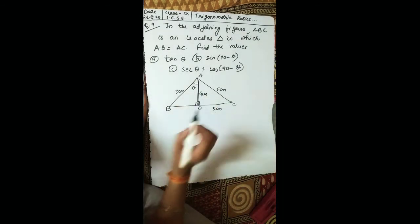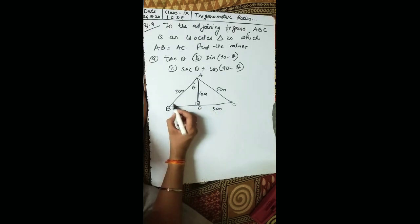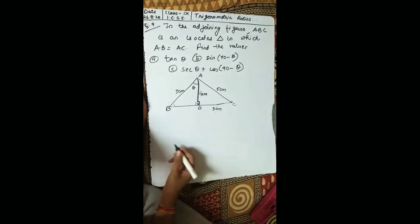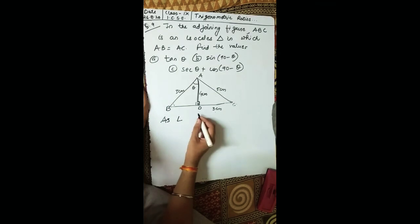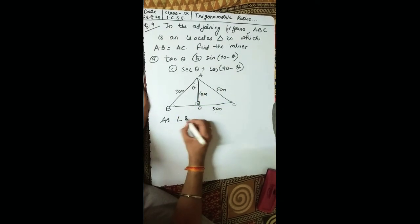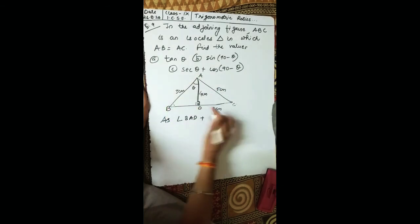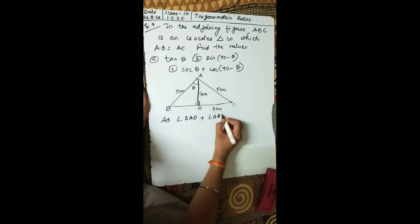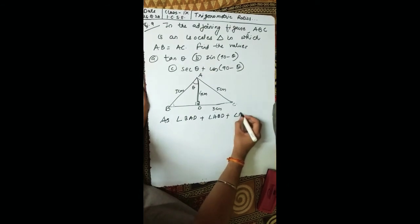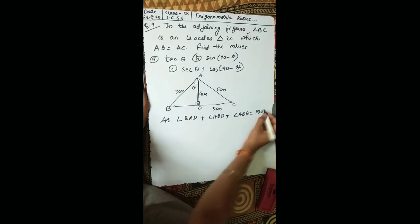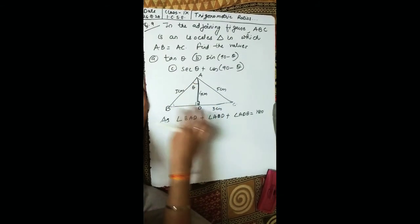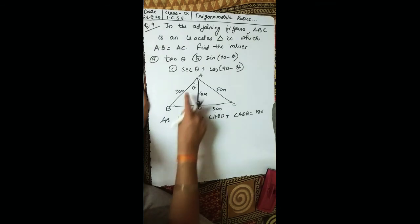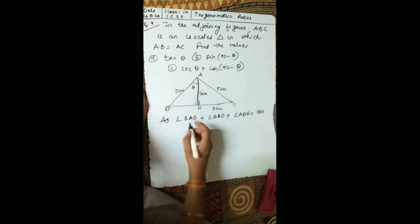We have theta and a 90-degree angle. Using the angle sum property in triangle ABD: angle BAD plus angle ABD plus angle ADB equals 180 degrees. Angle BAD is theta, angle ADB is 90 degrees, so theta plus angle ABD plus 90 equals 180 degrees.